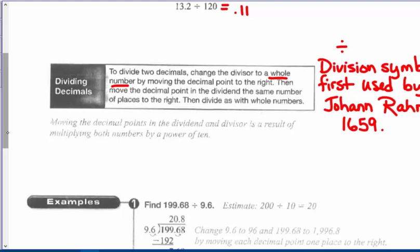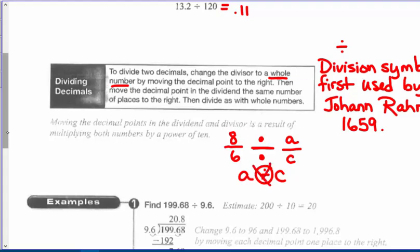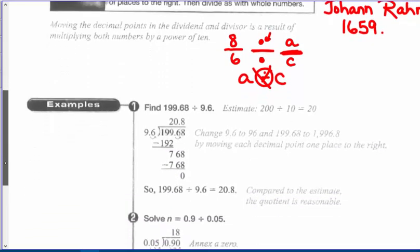The story goes that Johann was working very late into the darkness on problems involving fractions — something like eight divided by six. His lamp was getting dim, he was blurry-eyed, and the fraction bar with numbers above and below started looking like this division symbol. He thought: any number A divided by any number C could be written like this. I wish he had never discovered it — I prefer the fraction line as the division symbol. So we have Johann Rahn to thank for our division symbol.